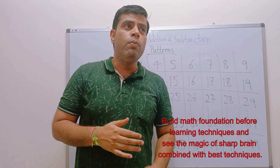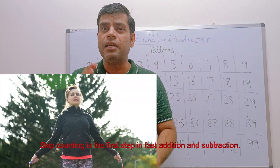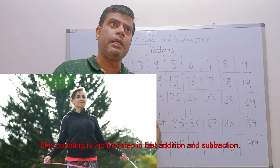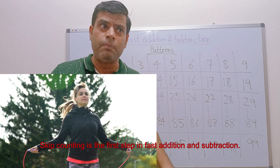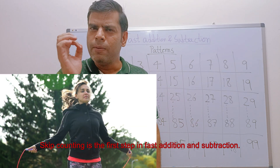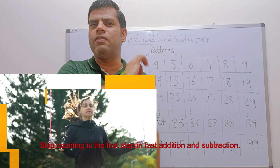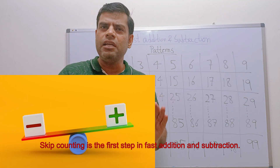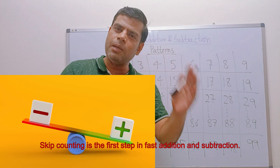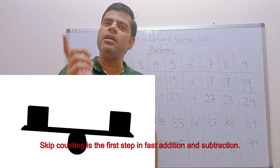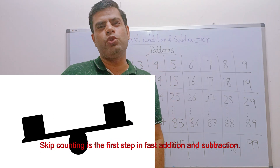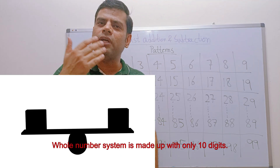In Grade 1 or KG, Grade 2, you must have seen kids learning skip counting. Have you thought about why it's included in the syllabus? The reason is simple — they are trying to teach you addition with skip counting and subtraction with reverse skip counting. But the question is: is it enough? I feel it's not enough — they should have included more in the scope.